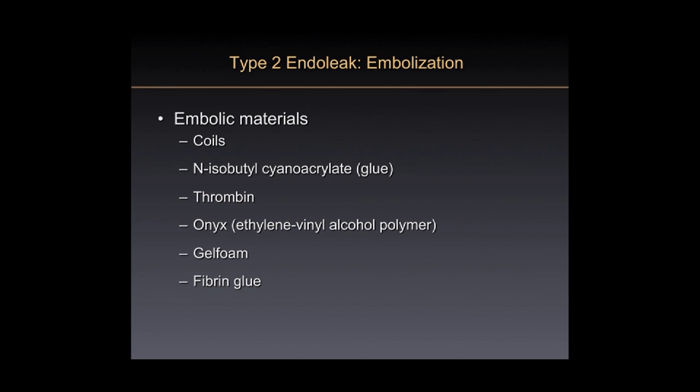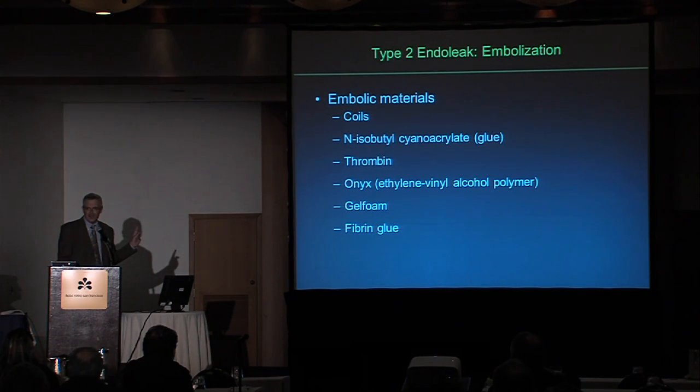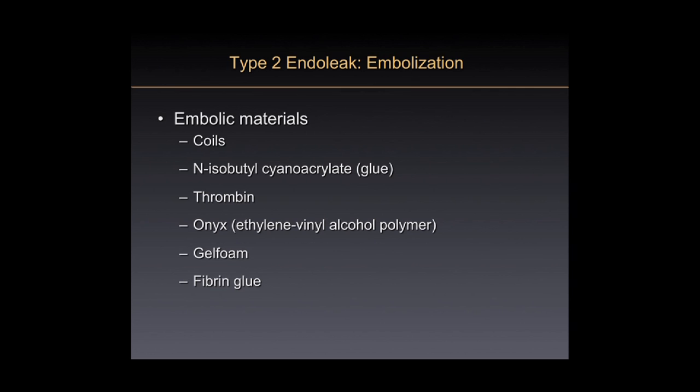Agents commonly used include coils, anisobutocyanoacrylate or glue, thrombin, Onyx — the new kid on the block, which many people are using to treat type 2 endoleaks and sometimes to fill the sac at the time of EVAR deployment — gel foam, which is swept into outflow vessels but is a temporary embolic agent that the body can dissolve, and fibrin glue. Gel foam is difficult to predict for permanent occlusion.